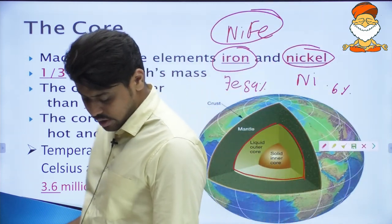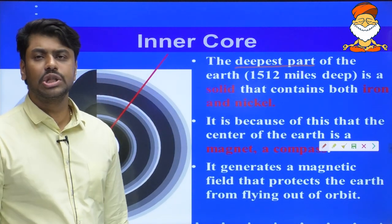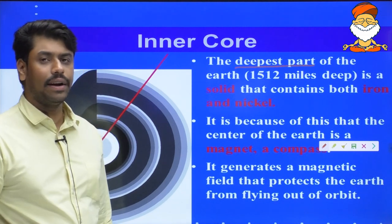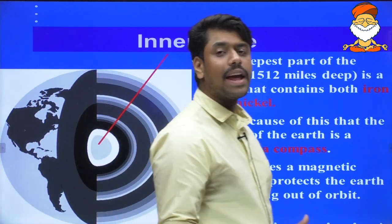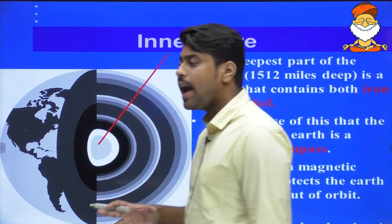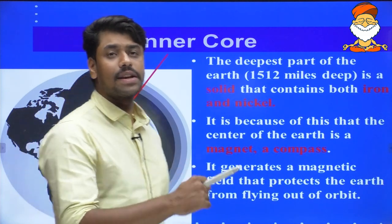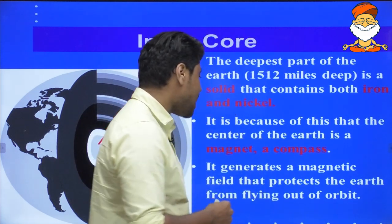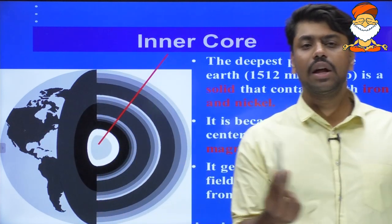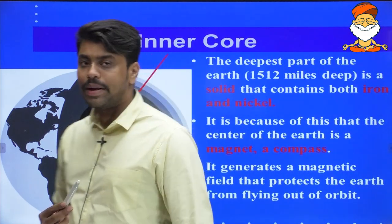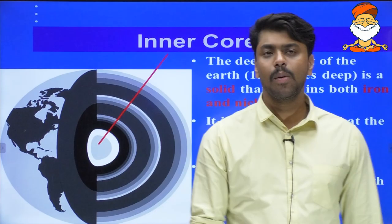The inner core is the deepest and most solid part of the Earth, containing NiFe — nickel and iron. Because of this, the center of the Earth becomes almost like a bar magnet, and it is the source of geomagnetism, which we will discuss in future classes. It generates a magnetic field that protects the Earth, giving us the magnetic North and South Poles.